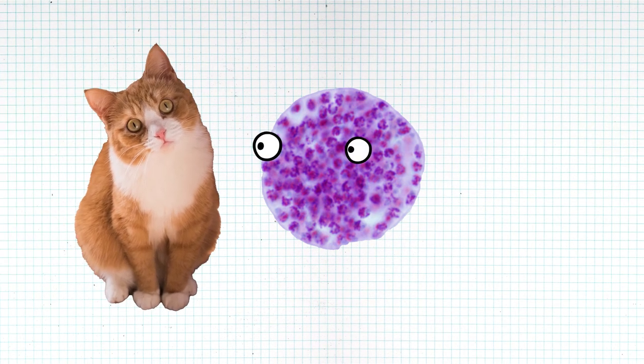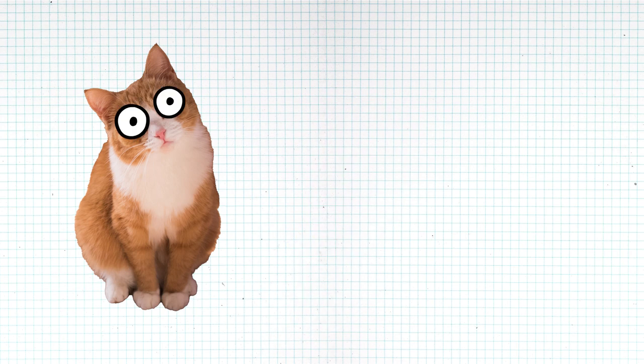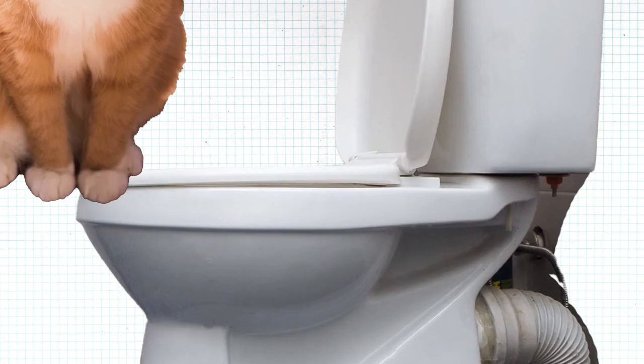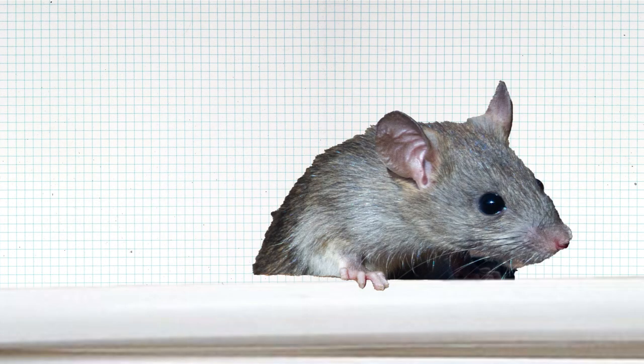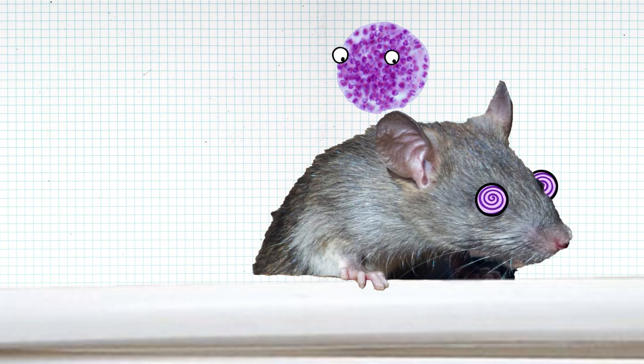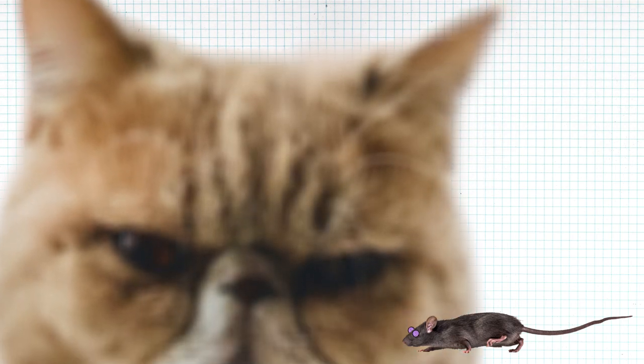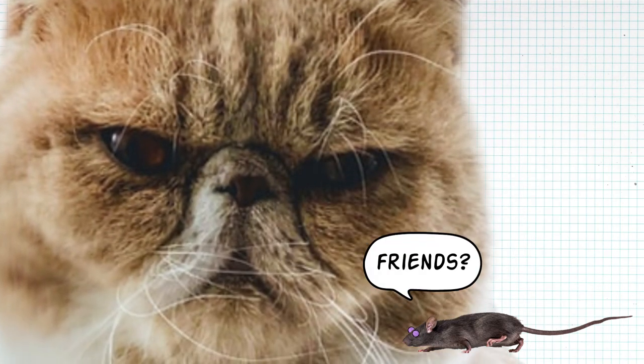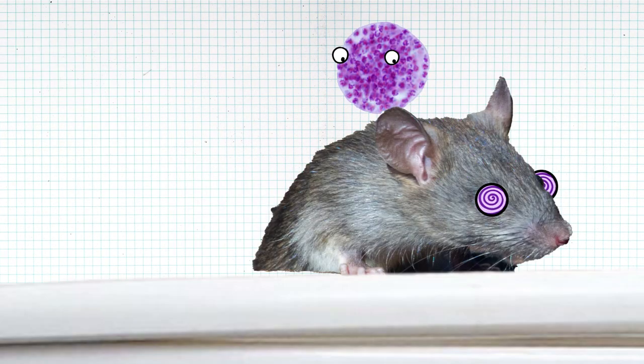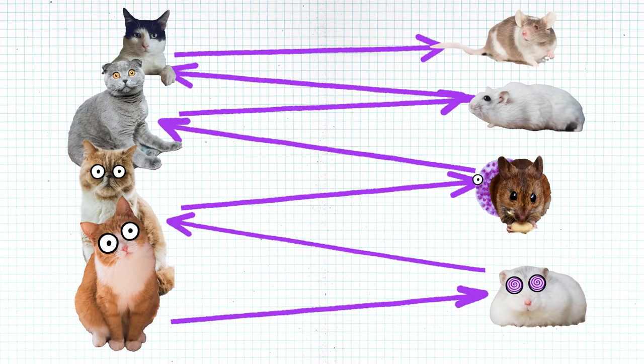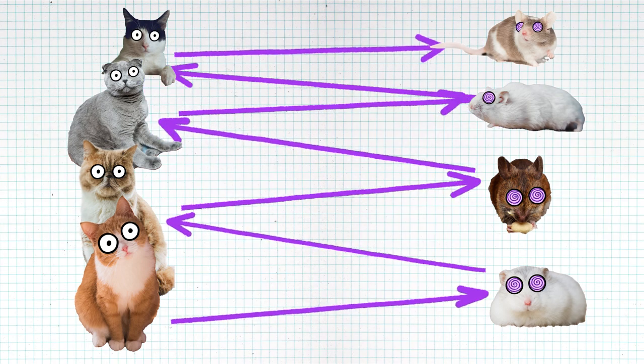The way this parasite works is that it starts off living in a cat. The cat then poops it out, until it ends up, via the water supply, in a rat. Once in the rat, the Toxoplasma hijacks its brain, convincing it to hang out conspicuously in areas where cats can eat it. The parasite is then back in the cat, who then poops it out, rat consumes it and gets brain hijacked, cat eats the rat, and so the parasite passes from cat to rat to cat to rat, and so on and so on.